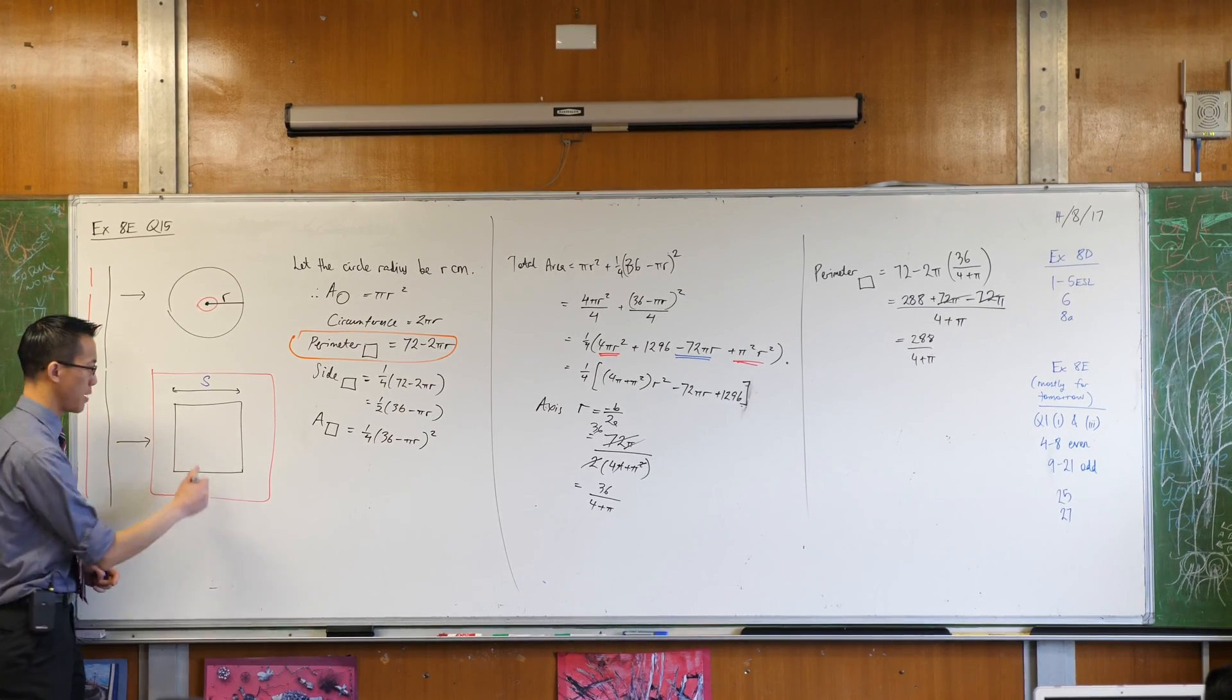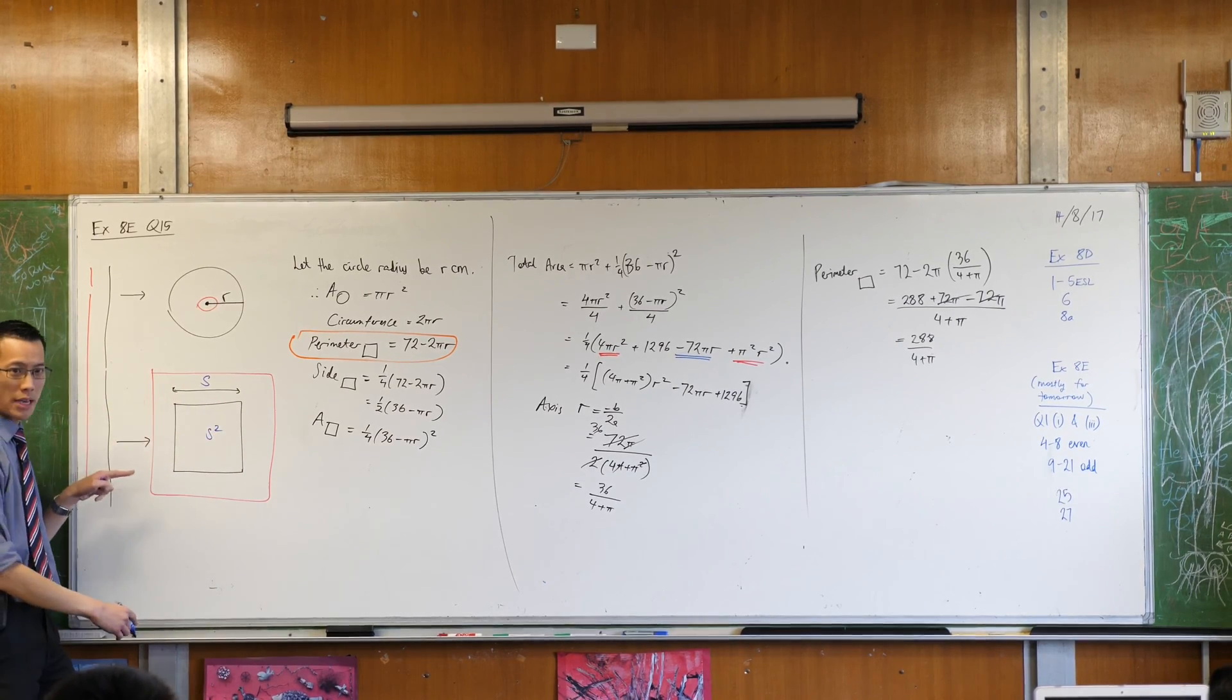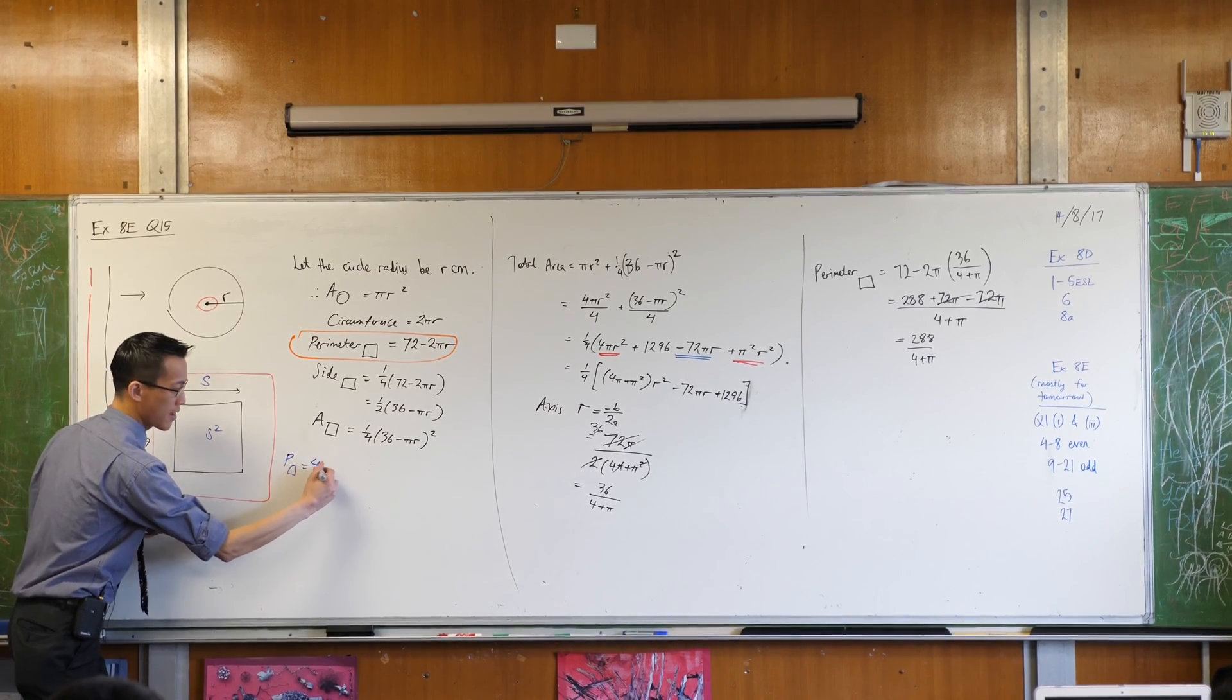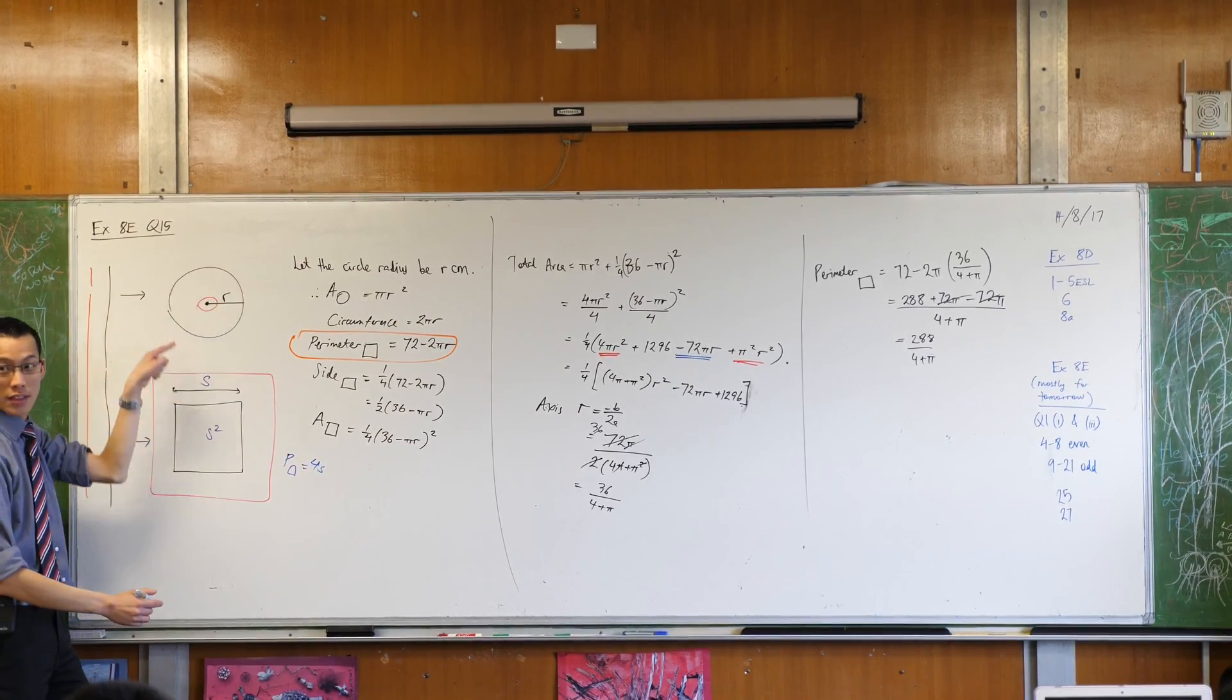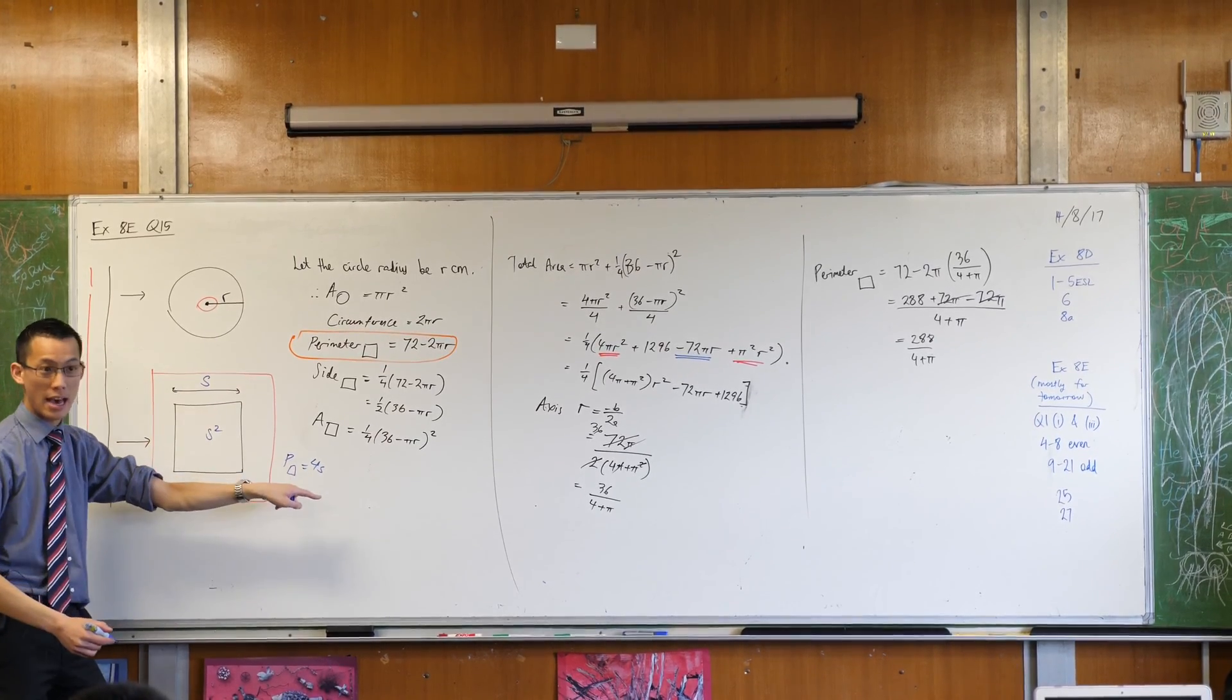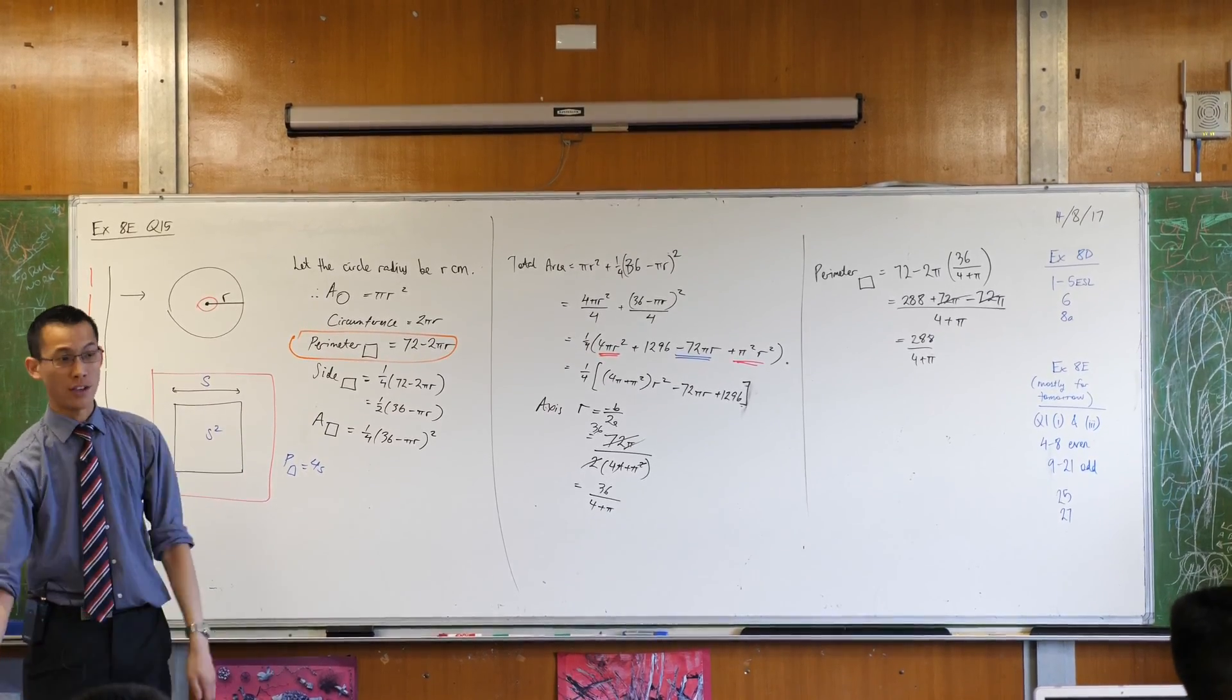Because the area of this thing will be s squared. The perimeter of this will be, the perimeter will be 4s, which makes the circumference of this 72 minus that. And then off you go, you'd get different equations. See if you get the same answer.